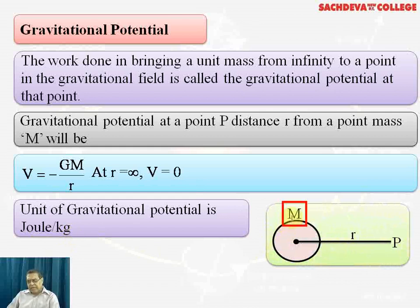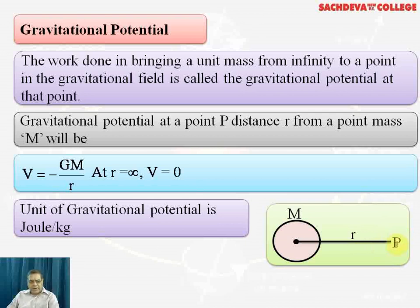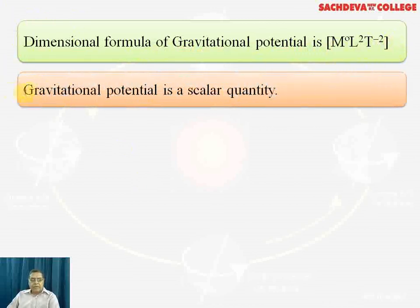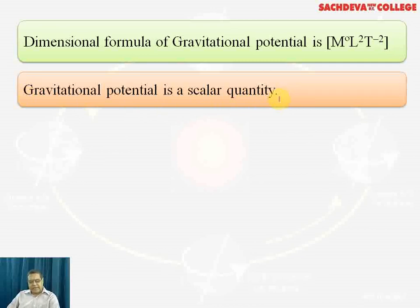From the figure, M is the bigger mass with a gravitational field, and we find the potential at point P as GM/r, where P must lie within the field of mass M. Gravitational potential is a scalar quantity, whereas gravitational field intensity is a vector quantity, which must have both magnitude and direction.